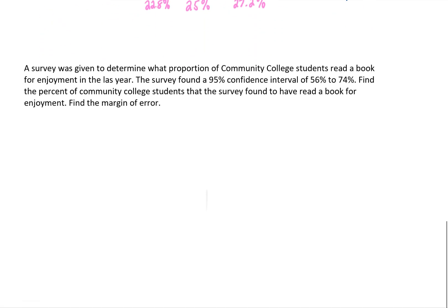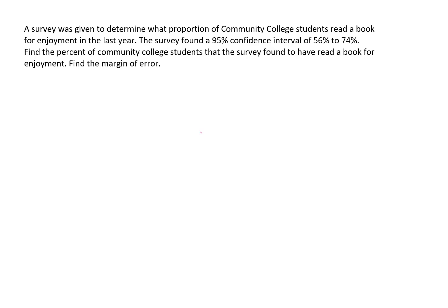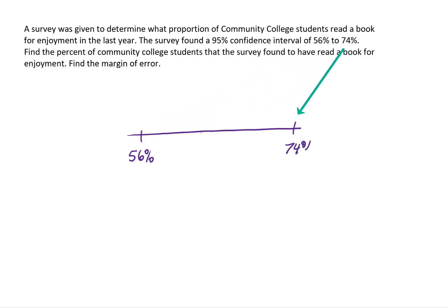Let's look at another example. A survey was given to determine what proportion of community college students read a book for enjoyment in the last year. The survey found a 95% confidence interval of 56% to 74%. They're giving us the confidence interval, and the actual proportion found in the survey should be right in the middle. To find that middle value, we average the two: 56 plus 74 divided by 2 equals 65. So 65% of those surveyed read a book for enjoyment in the past year.